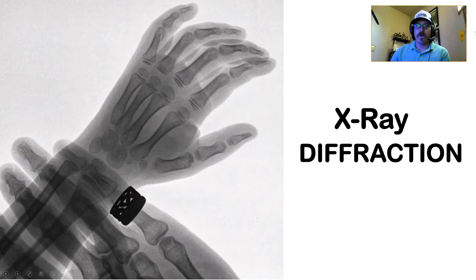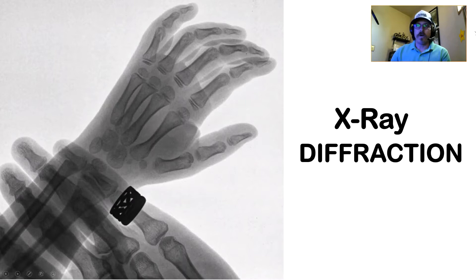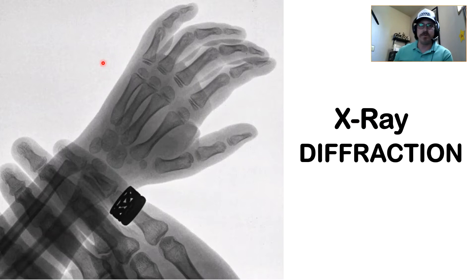When you go up to someone on the street and ask them how scientists use x-rays, most people think of an x-ray radiograph, similar to the one shown here. My son, when he was smaller, had fallen and fractured his finger — you can kind of see the fracture here. This is an example of using x-rays, where you use contrast to interpret the image or the output of the instrument.